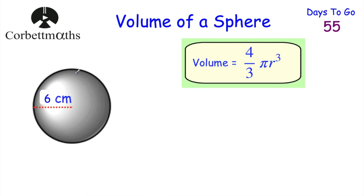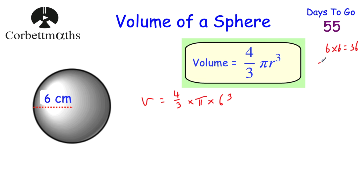Now let's look at a non-calculator question. We want to find the volume of the sphere, so press pause and try it without a calculator. The volume equals 4/3 × π × 6³. We need to work out 6³: 6 × 6 = 36, then 36 × 6 = 216. So 6³ = 216.